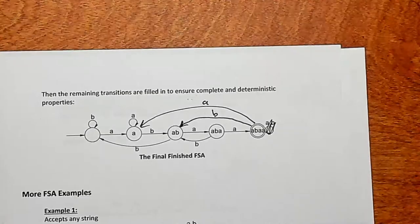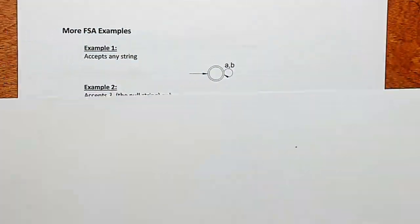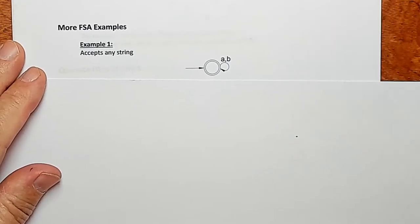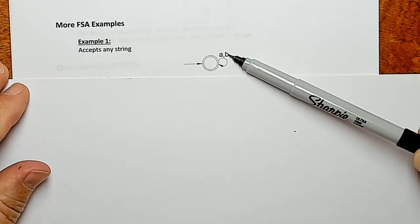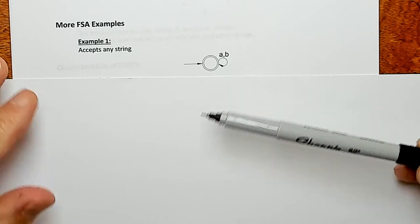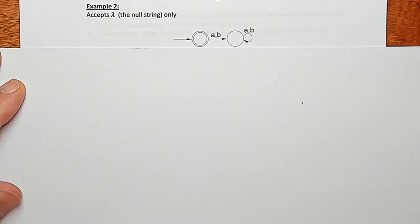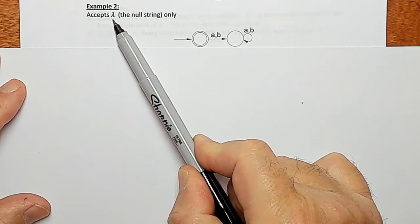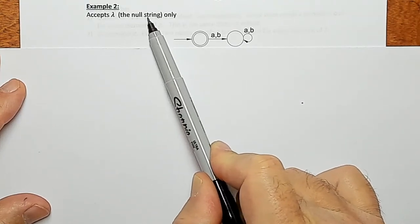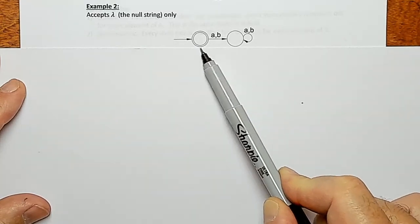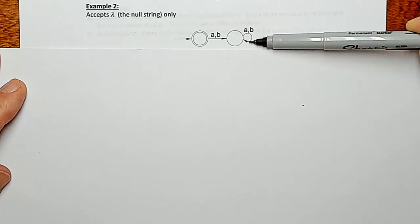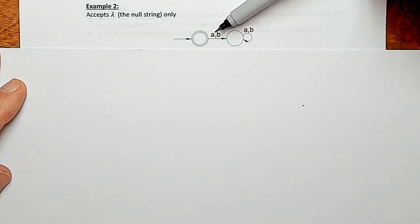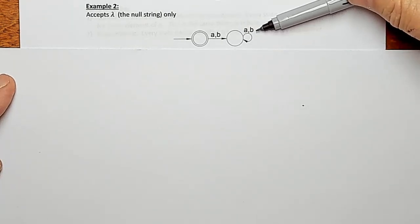Let's work a couple more examples. This machine will accept any string — because you start off in an accept state and no matter what you get you move back to that accept state. This machine will accept only the null string — represented by lambda — because you start in the accept state and if you get any input you move to a non-accept state called a sink, and any additional input keeps you there.